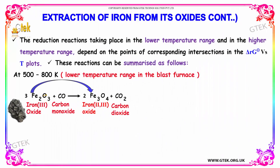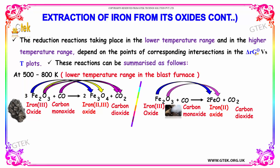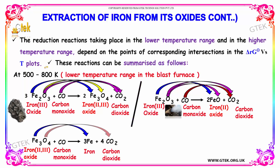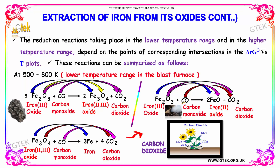The reduction reactions take place in the lower and higher temperature ranges depending on the points of intersection in the delta G versus T plots. These reactions can be summarized as follows: Fe2O3 plus CO gives Fe3O4 plus CO2; Fe3O4 plus CO gives iron and CO2. Alternatively, Fe2O3 plus CO may give FeO, which is then further reduced to iron.